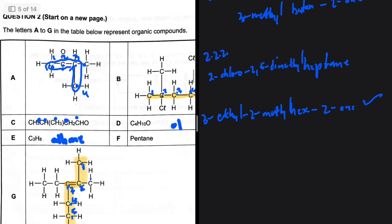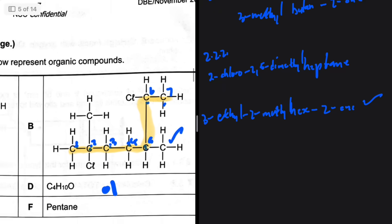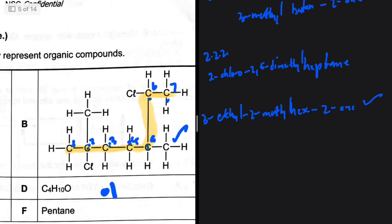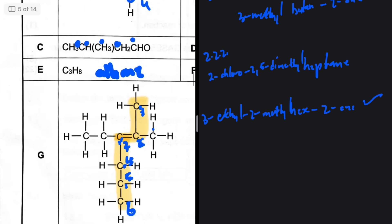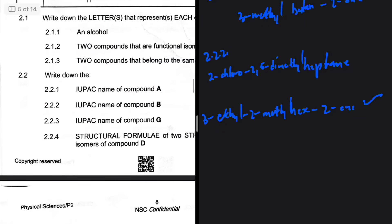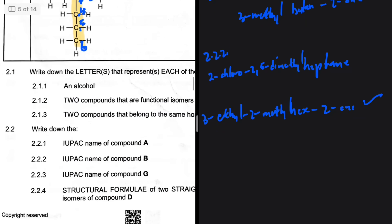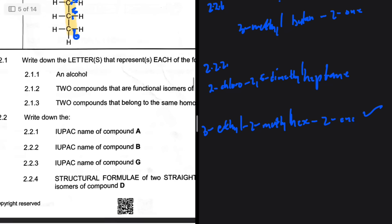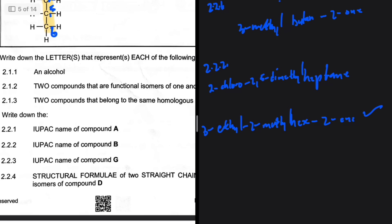Quick check on 2.2.2: seven carbons — heptane; branch on the second carbon — one is chloro, one is methyl; another methyl on the fifth carbon. That looks good. So we've now named compounds A, B, and G.